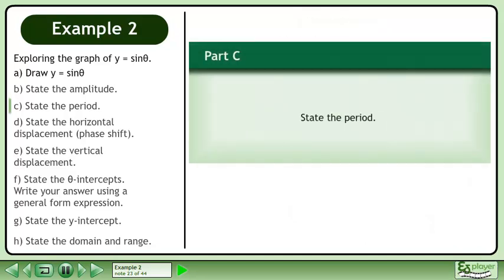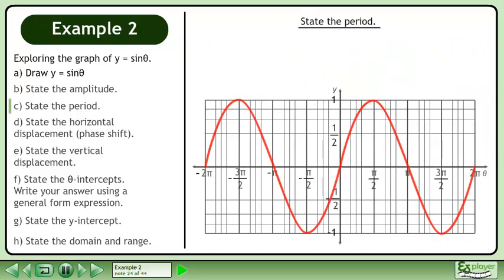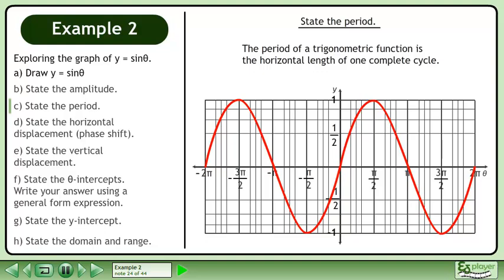In part c, we'll state the period. The period of a trigonometric function is the horizontal length of one complete cycle. By inspection, we can see that one cycle has a period of 2pi.